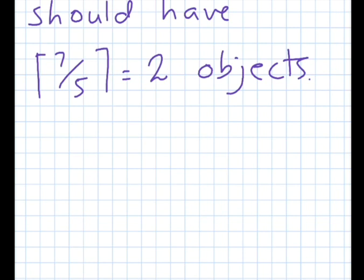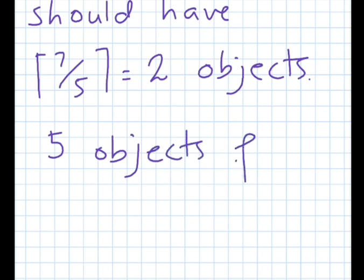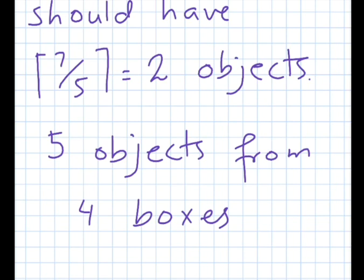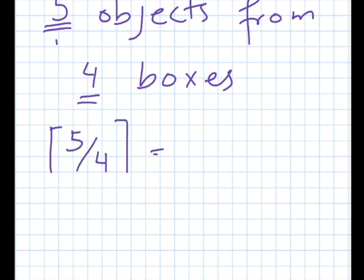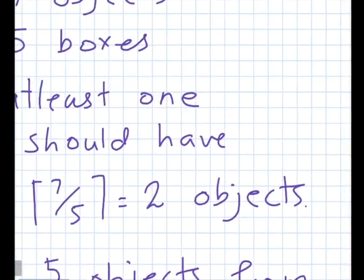So we apply the pigeonhole principle again. Having chosen one pair already from one box, we have five objects left and four boxes remaining. The pigeonhole principle then says one of those four boxes should have the ceiling of 5 over 4, which is again 2 objects.